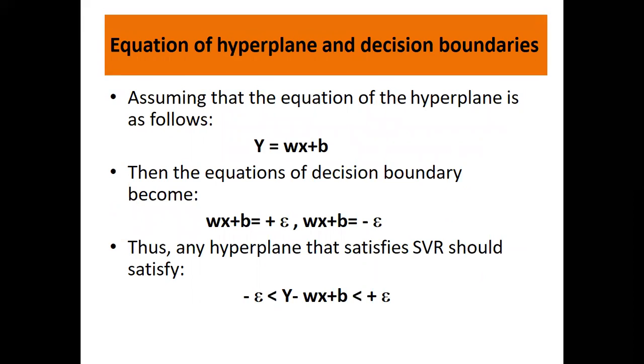Assuming the equation of the hyperplane is y equals wx plus b, then the equation of the decision boundary becomes wx plus b equals positive epsilon and wx plus b equals negative epsilon. Any hyperplane that satisfies support vector regression should satisfy this. If the value is on the lower side then it is minus epsilon; if it's on the upper side then it is positive epsilon.